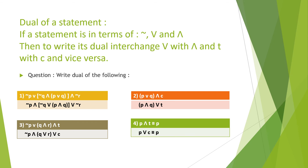Next, the definition of dual of a statement. The condition to write the dual is that the given statement pattern should be in terms of negation, conjunction, and disjunction — that is, in terms of negation, OR, and AND. The rule to write the dual is: interchange OR and AND, meaning interchange disjunction and conjunction.